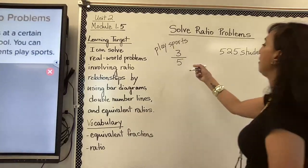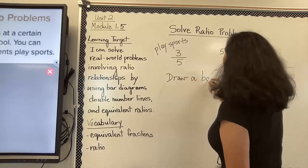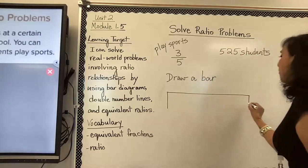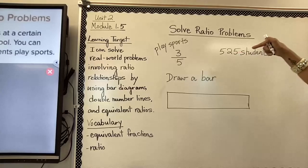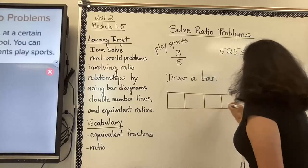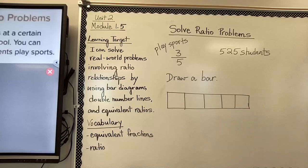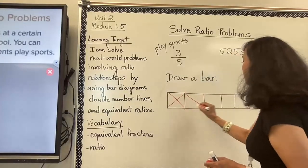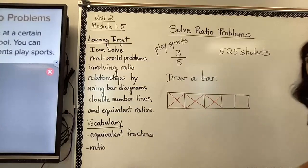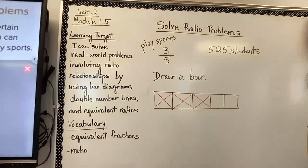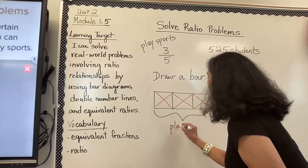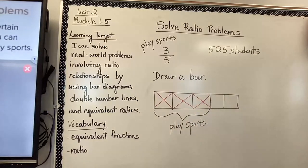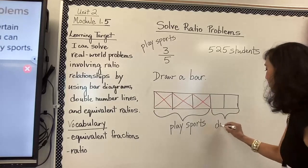Since we are saying three out of five, we are going to draw a bar with five parts — one, two, three, four, and five — because five is our denominator. Three out of five students play sports, so I divided the bar into five equal sections. I'm going to shade and label the diagram: three sections play sports, and the remaining two sections do not play sports.